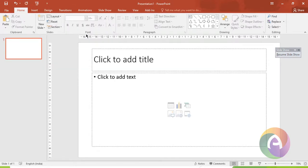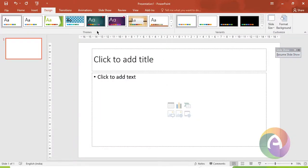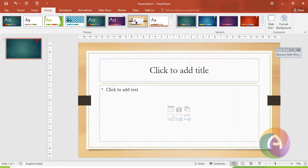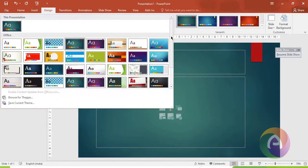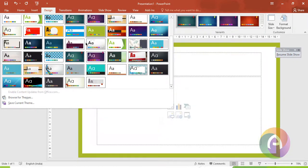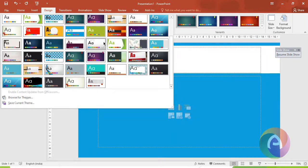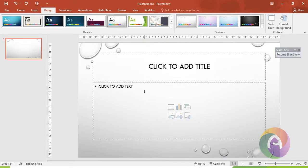Next is Layout Design. To add a specific theme to the slide, click the Design tab and select a theme. There are multiple themes available. Hover the mouse over themes to preview them. Click the Design tab, select a theme, and let's click Browse for Themes and select a theme.